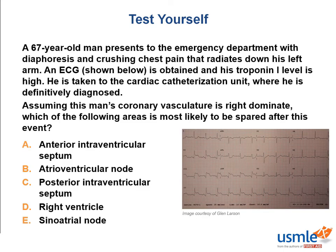Time for a question. A 67-year-old man presents to the emergency department with diaphoresis and crushing chest pain that radiates down his left arm. An ECG is obtained and his troponin I level is high. He is taken to the cardiac catheterization unit where he is definitively diagnosed. Assuming this man's coronary vasculature is right dominant, which of the following areas is most likely to be spared after this event?